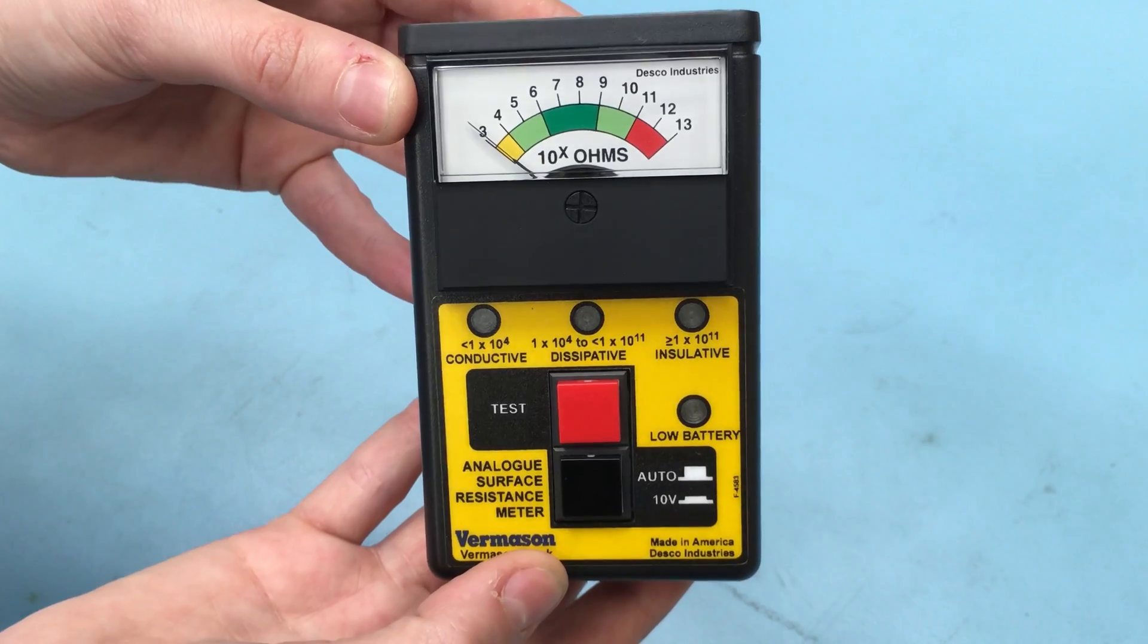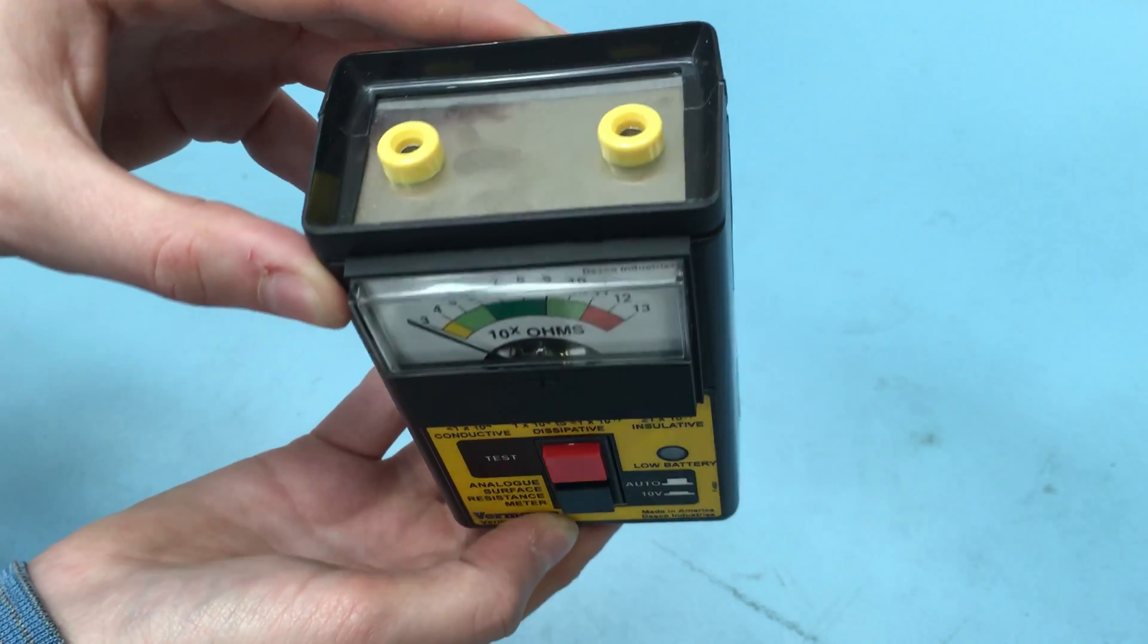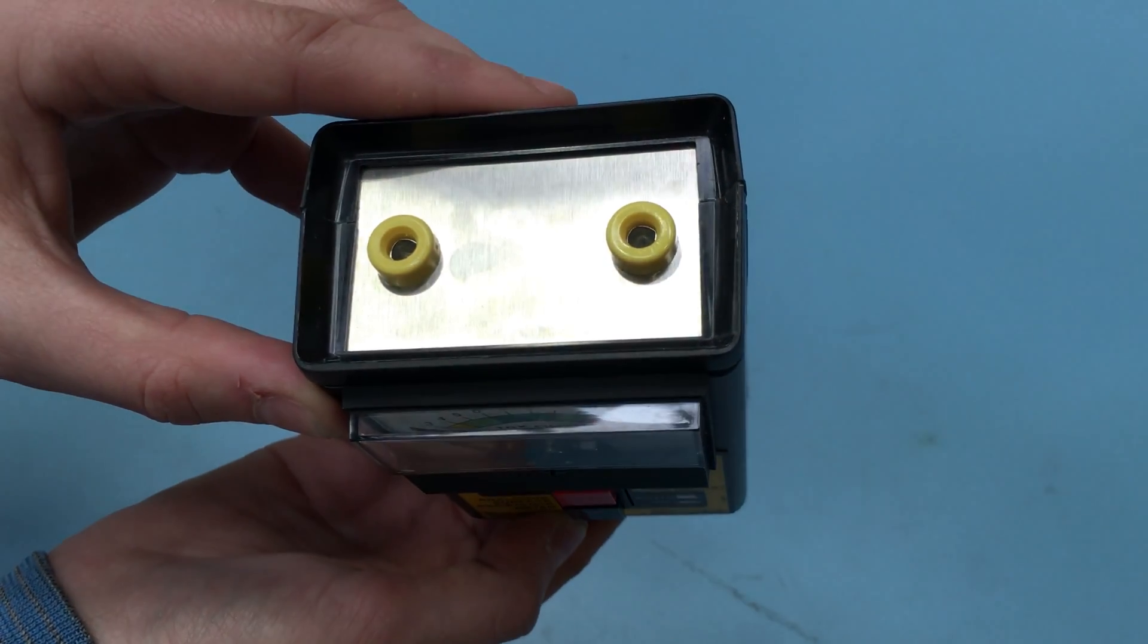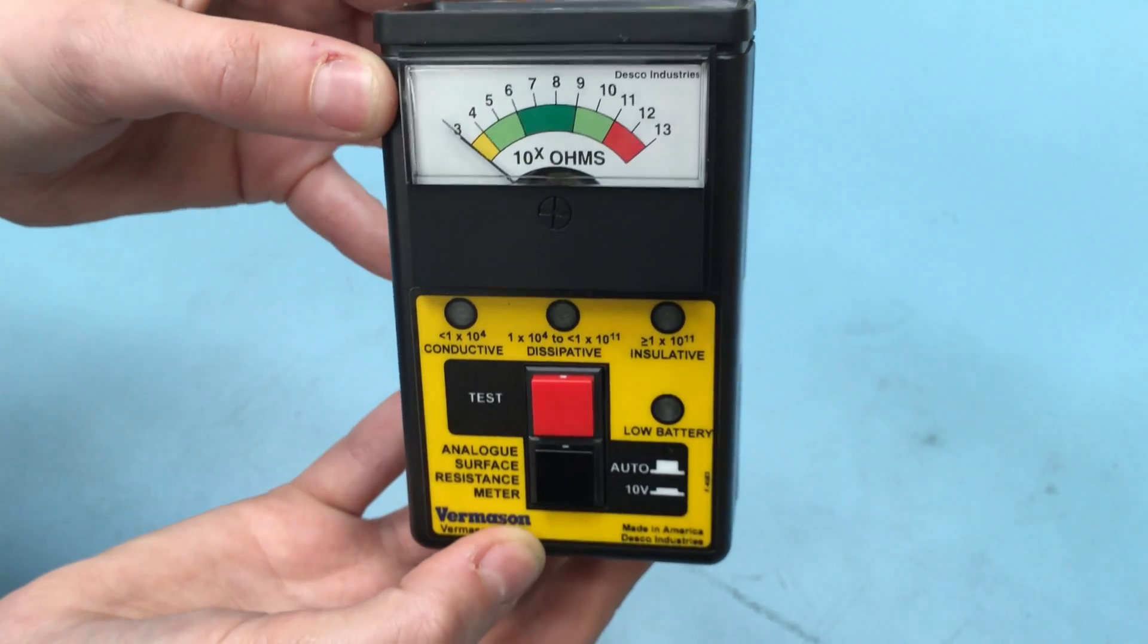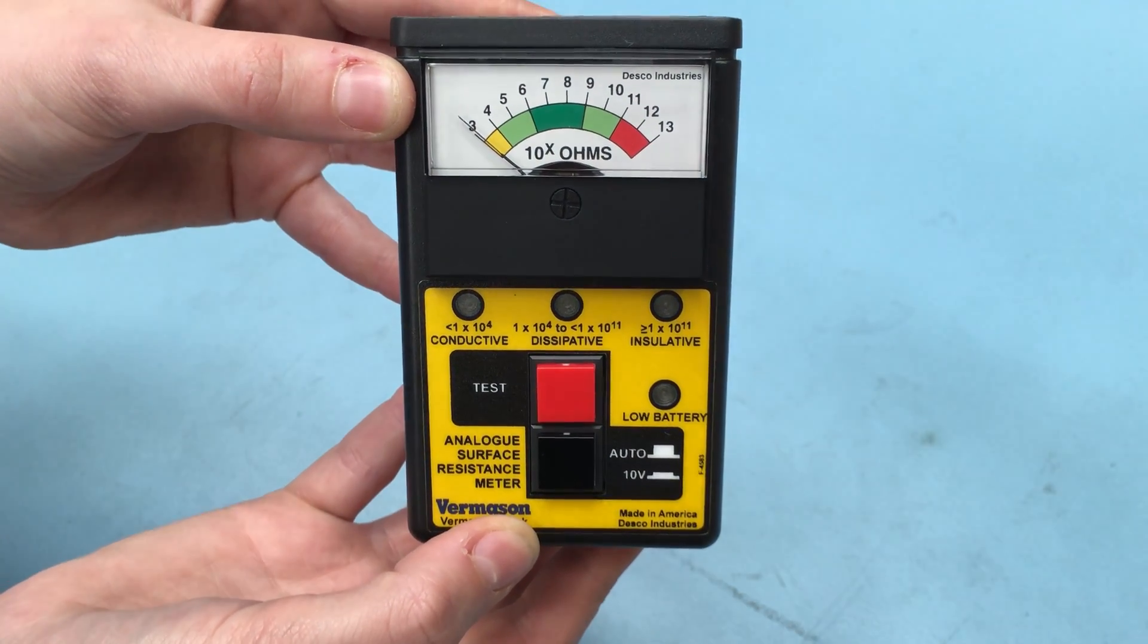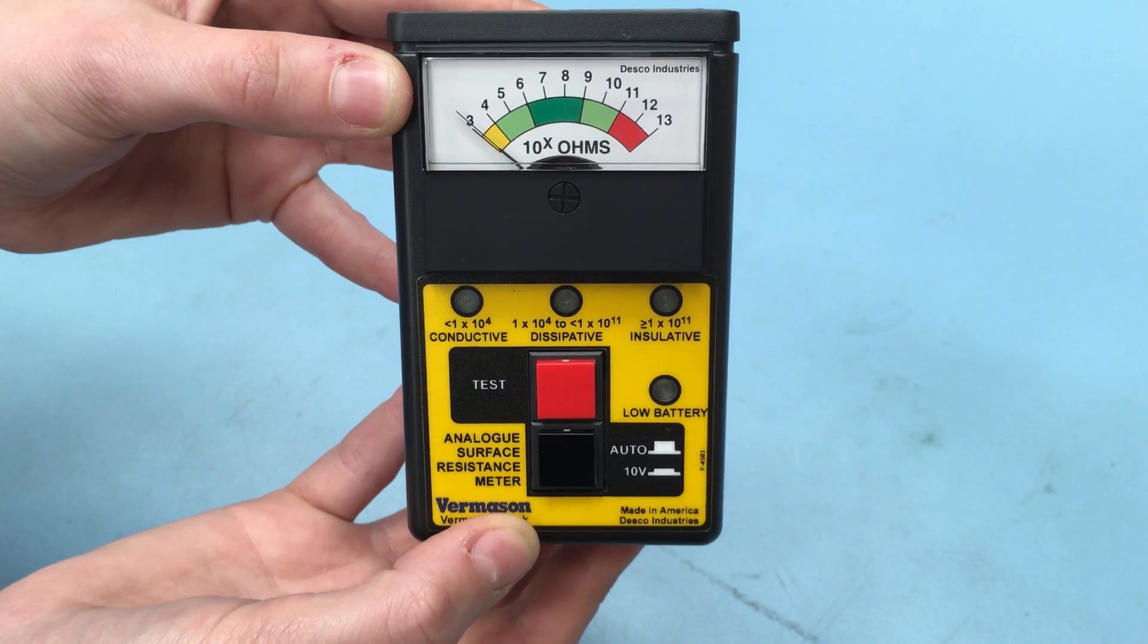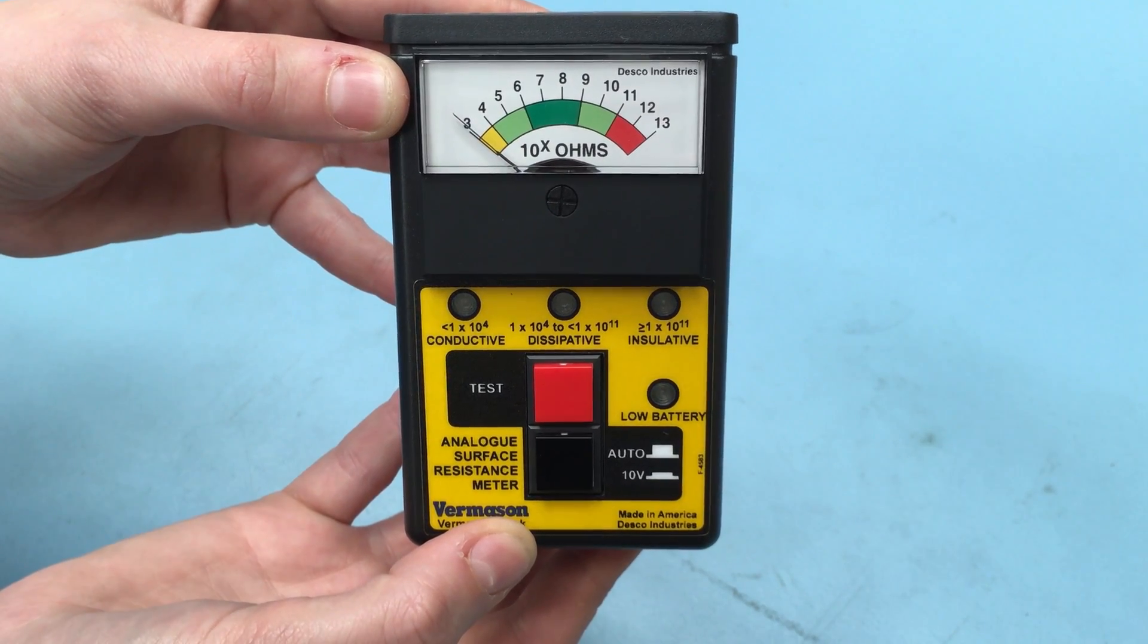The Analog Surface Resistance Meter is a portable battery-powered instrument designed to measure resistance to ground and resistance point to point, in accordance with ESD control standards including the European EN 61340-5-1.